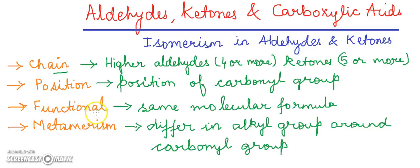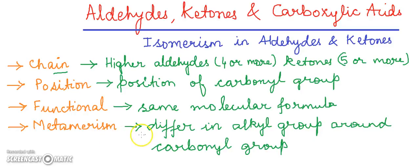In functional isomerism, aliphatic aldehydes and ketones have the same molecular formula but they differ in the functional groups. In metamerism, ketones show metamerism in which the isomers differ in the alkyl groups around the carbonyl group.